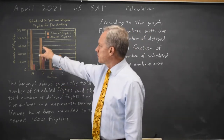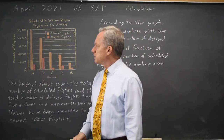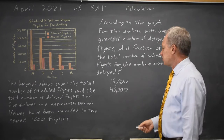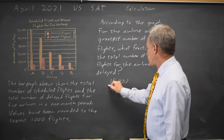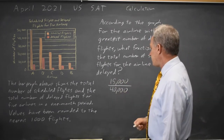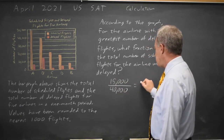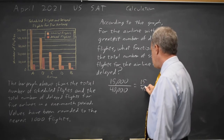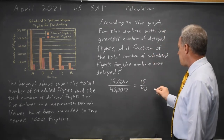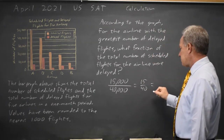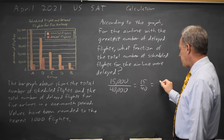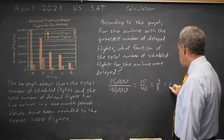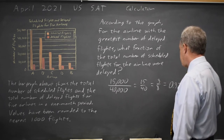Plus, the bars they're asking about go exactly to the lines that they've marked values on. So the fraction we want is 15,000 over 40,000, which is 15 over 40. And those are both multiples of 5 — that's 3 times 5 over 8 times 5, which is 3 eighths or 0.375.